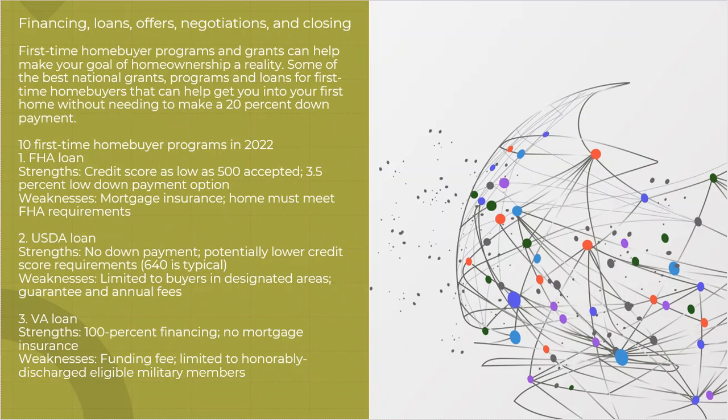First-time homebuyer programs and grants can help a lot of these first-time homebuyers achieve their goal of home ownership. There are 10 or 11 that we're going to talk about here that are specifically designed for first-time homebuyers for people with less than 20% down. Now remember, the average down payment was only 5% according to the NAR statistics. So let's talk a little bit about some. I've labeled 10 of them for the first-time homebuyer program.